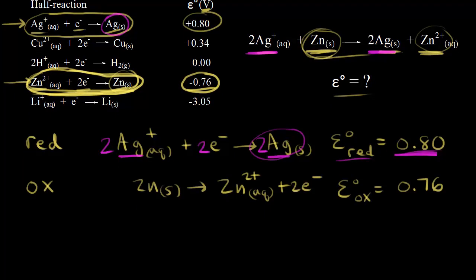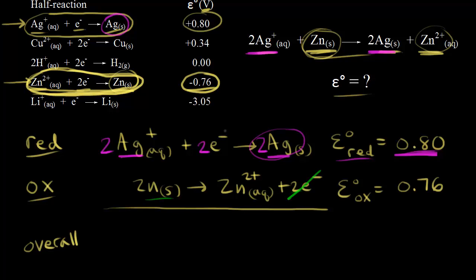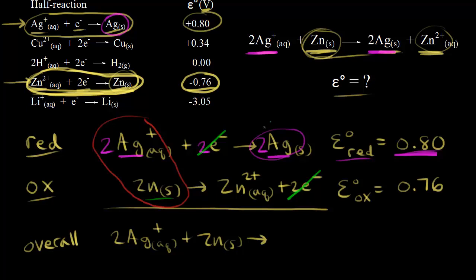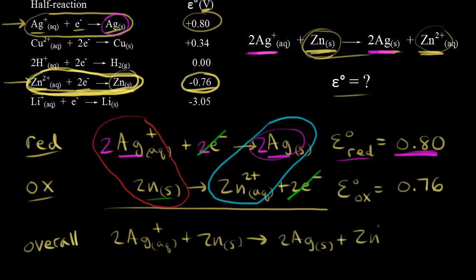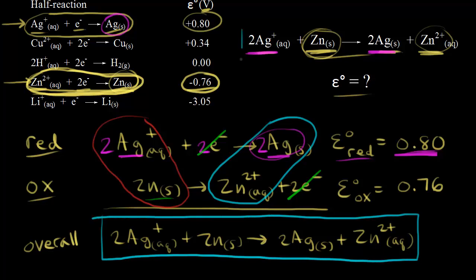The number of electrons is now equal, so we can add our two half reactions together to get our overall reaction. The electrons lost by zinc — these two electrons — are the same electrons gained by the silver ions, so those cancel out. On the left side we have 2Ag+ plus solid zinc, and for our products we have 2Ag plus zinc two plus. Notice this overall reaction is the same as what we were given in our problem.